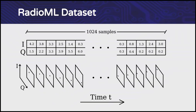We get the radio signals from a dataset called RadioML, which contains 2 million signals with their associated modulation classes. The signals are represented as IQ samples over time, which we convert into images to feed as input to the network.